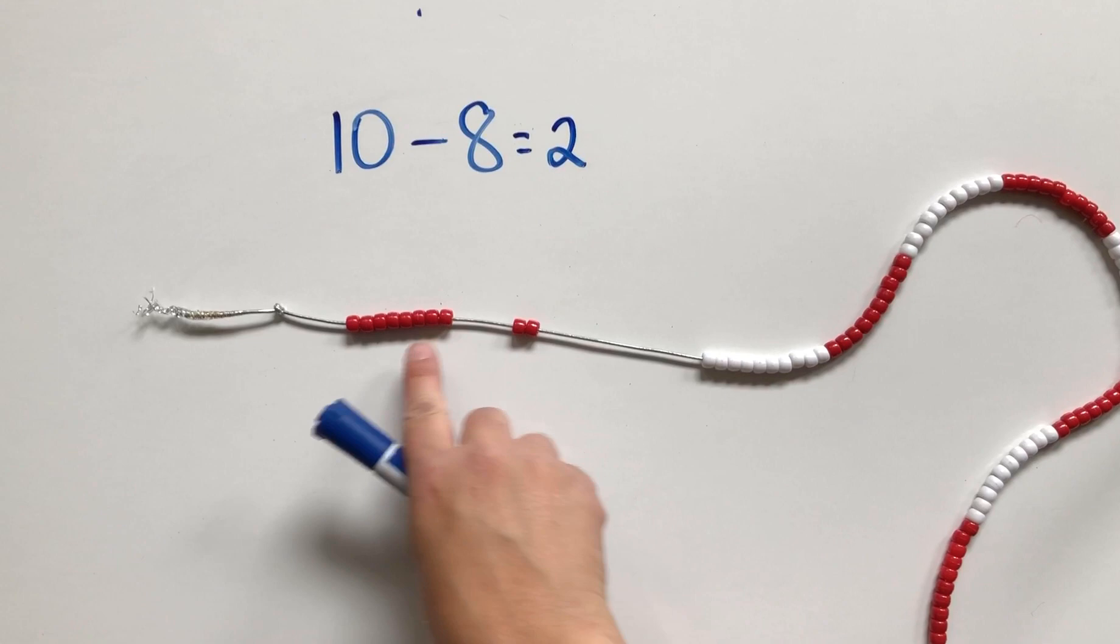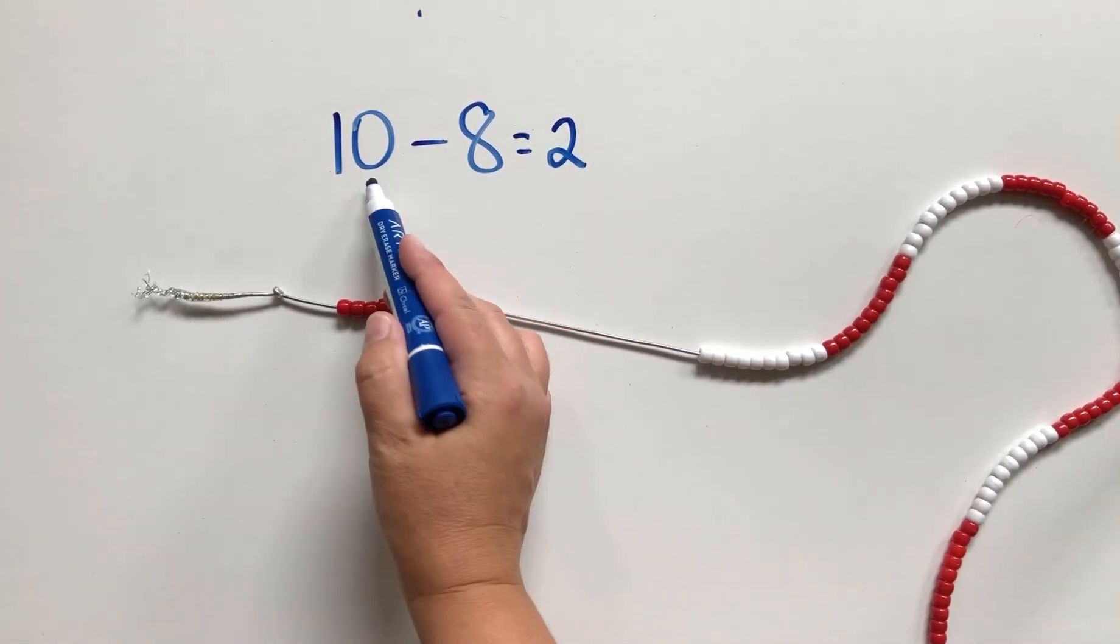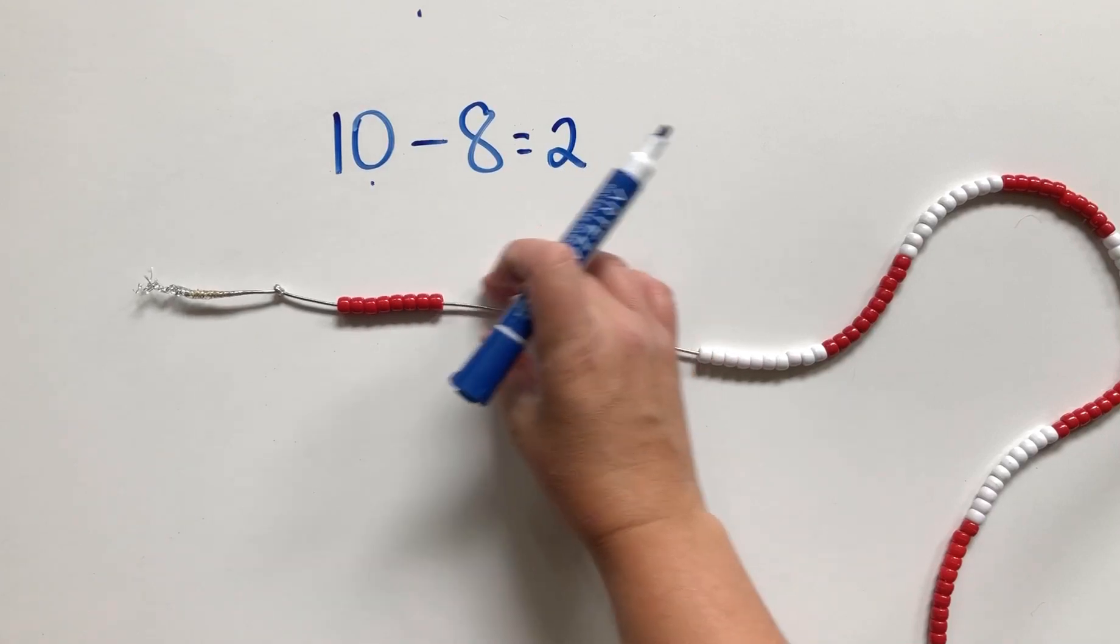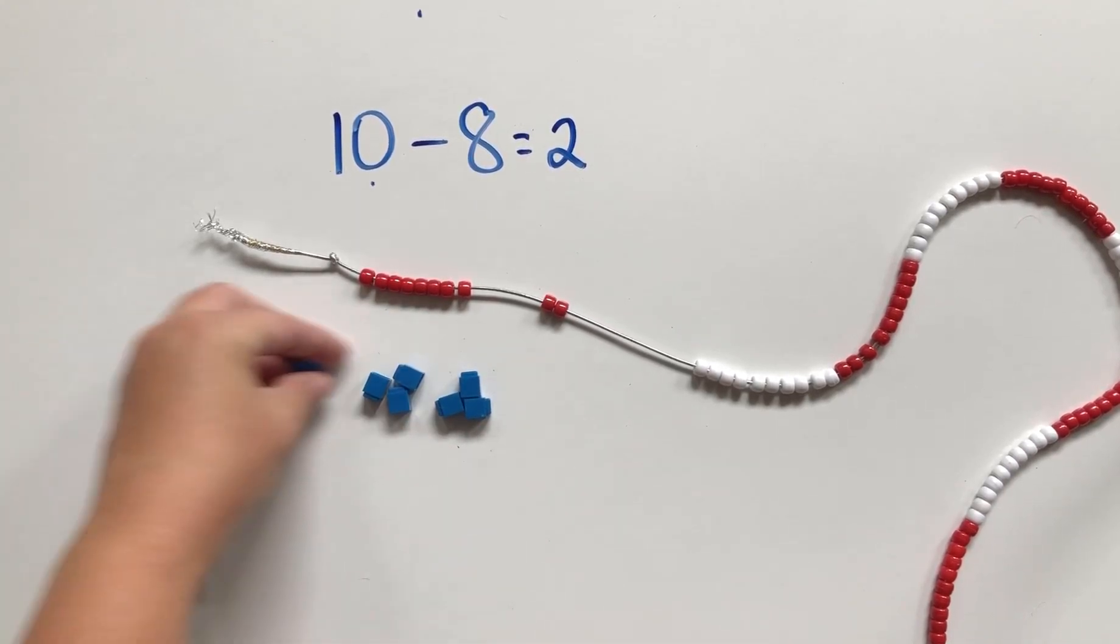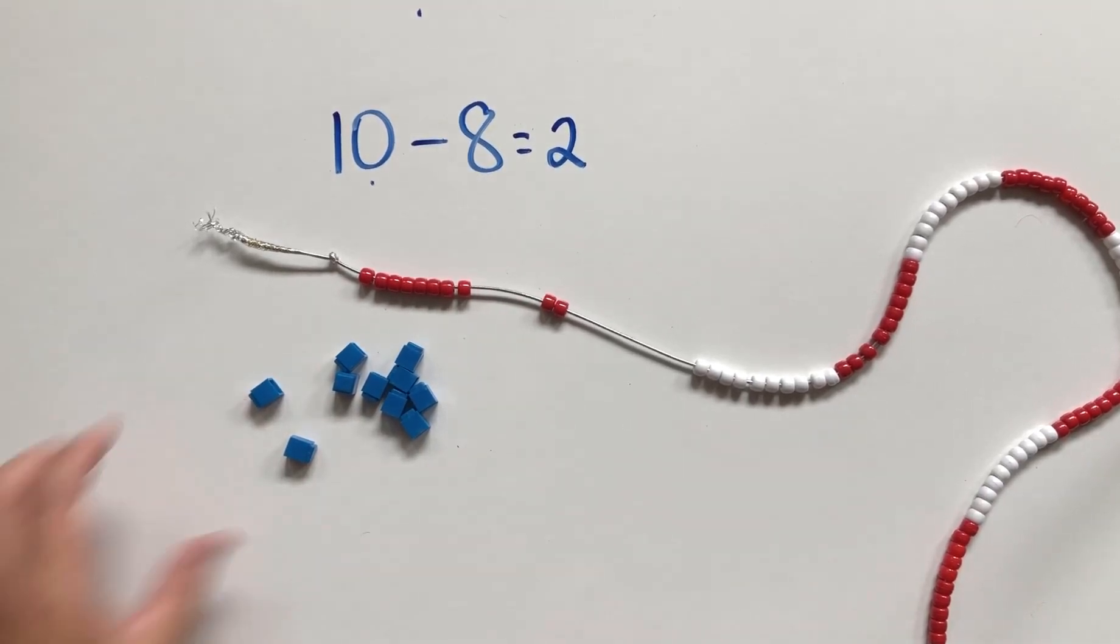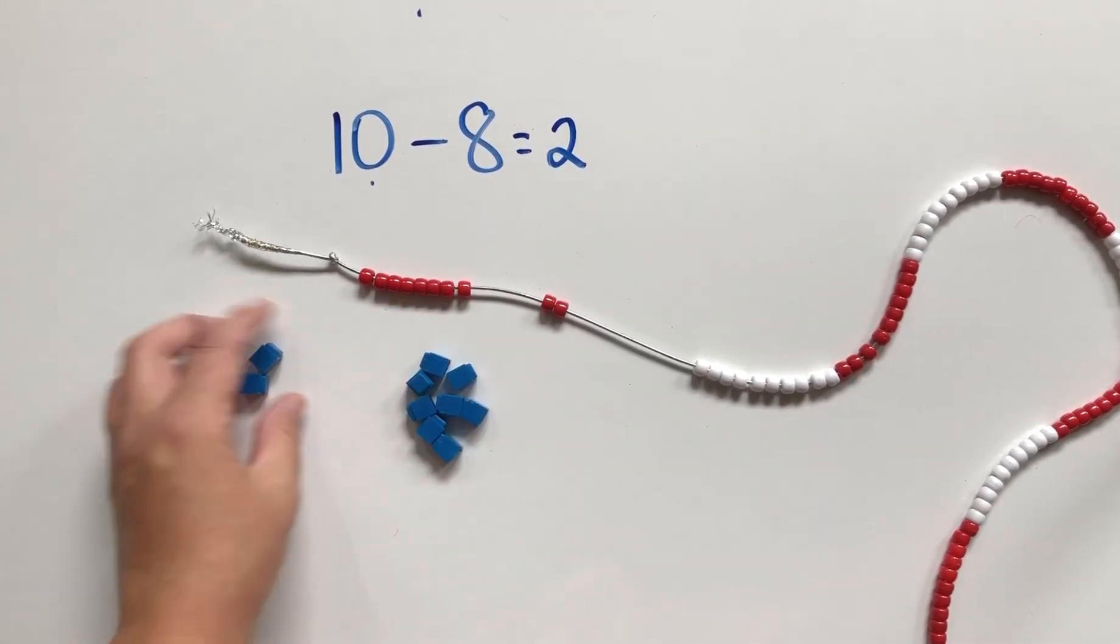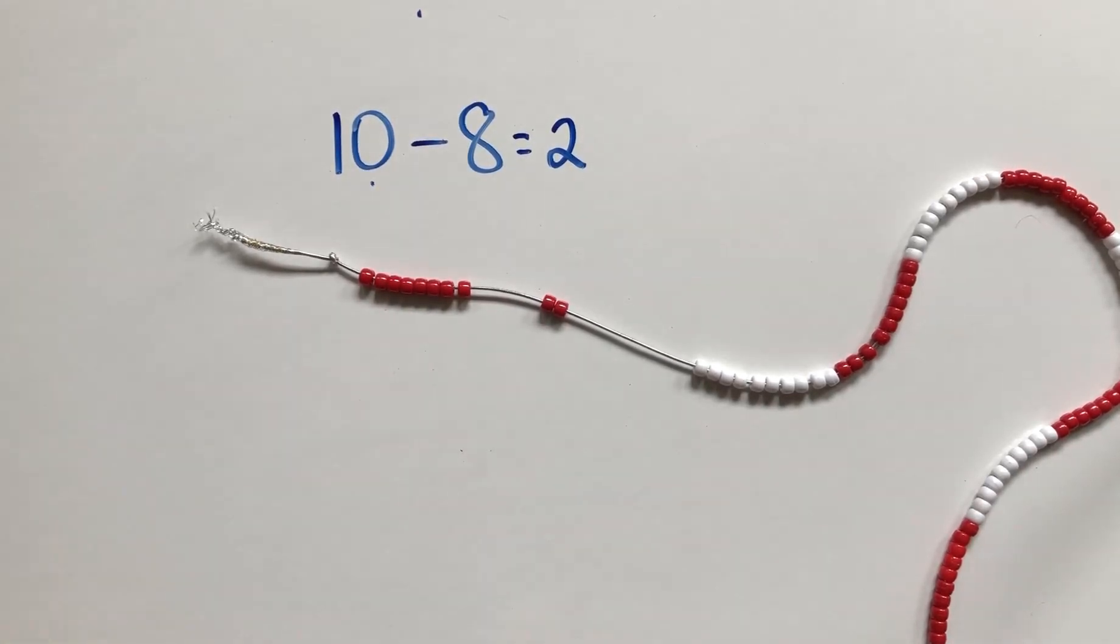Again, here are our parts, and together they make our whole. So here's a great concrete way to do it. We could also use base 10 blocks as a concrete tool. We start with 8—there's 8—and then we just count up to 10: 9, 10. Here we can see again our two parts, 2 and 8, and together they make 10. This is all concrete experiences.